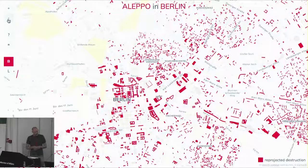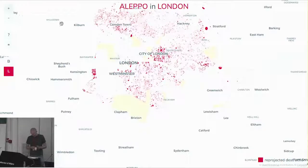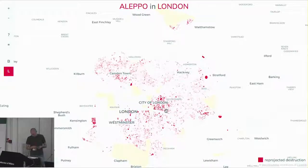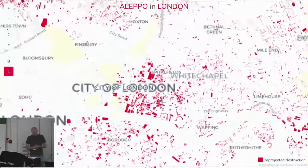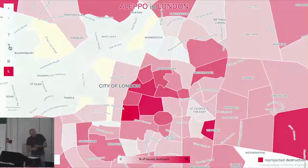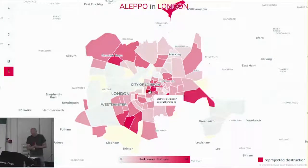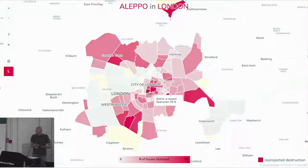I also added London, because that's another place I'm familiar with. The buildings marked in red, you can see on the map here, show the buildings destroyed had the war waged in Berlin or London. You can also blend in a data layer to see the actual numbers. The project was well received by the press, especially in Berlin, probably because it took something unimaginable to a familiar place.